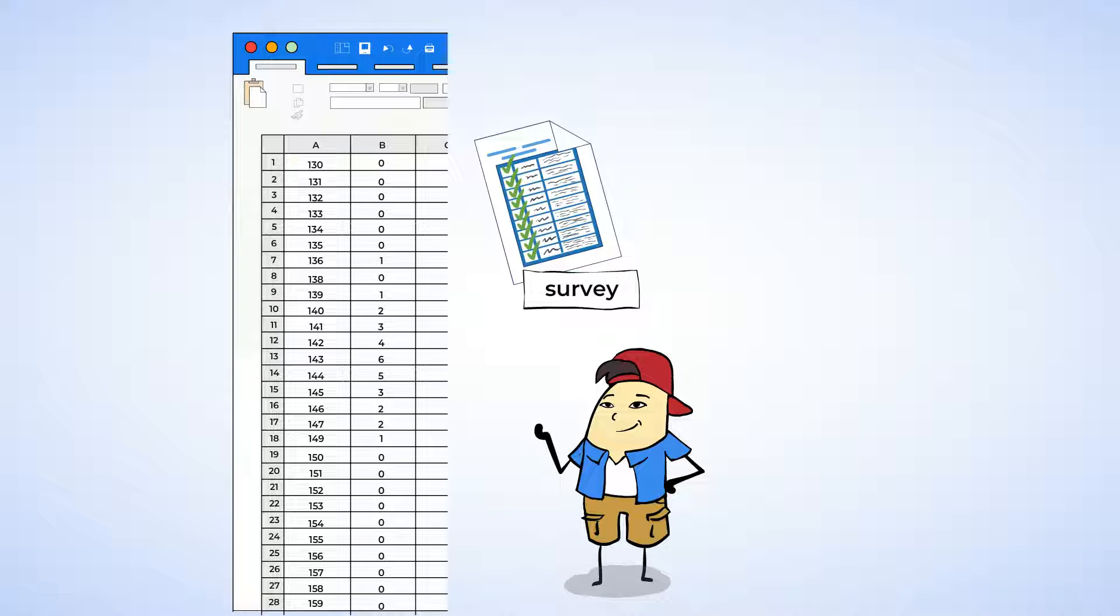Chen did a survey of his classmates' height, and this is his frequency table. Hmm, I'm sure there must be a better way to represent this data. Indeed.